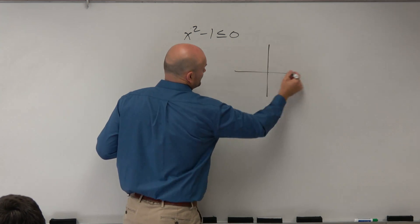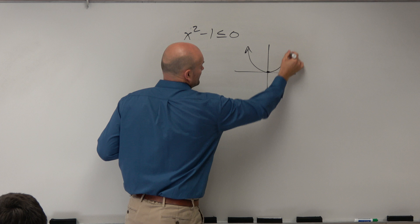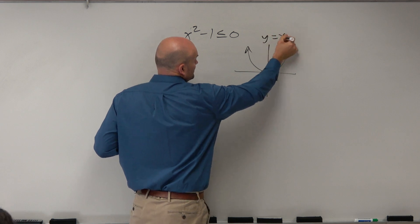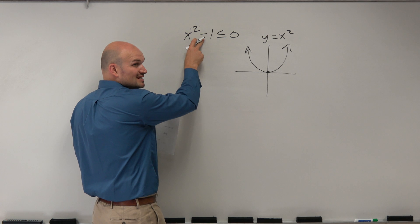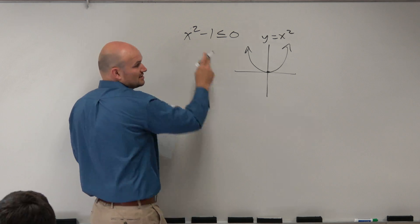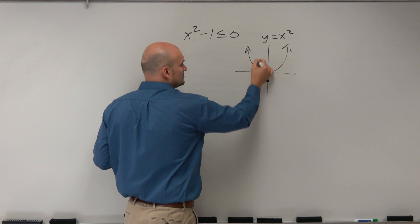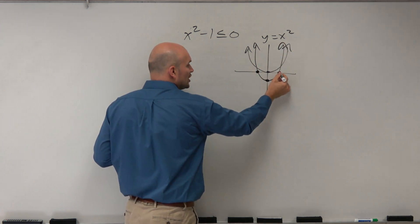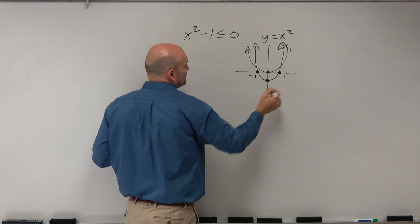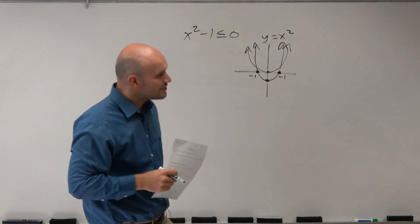So hopefully you guys are familiar with this: y equals x squared. So if I was going to go y equals x squared minus 1, what that's going to be is that's going to be a horizontal transformation down 1.